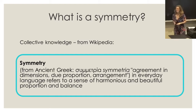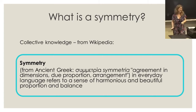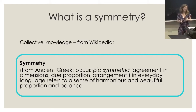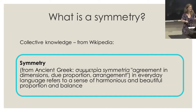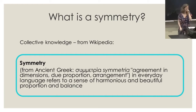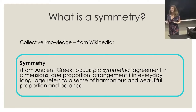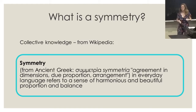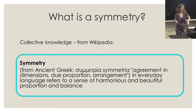Please feel free to interrupt me at any point if you have questions, comments, or something needs clarification. I wanted to start with the question: what is a symmetry? If you look in Wikipedia or ask people — I did this experiment asking my family and others — the words that appear are beauty, balance, harmony, reflection, proportion. That's kind of what you find in Wikipedia. So where do we find these symmetries?